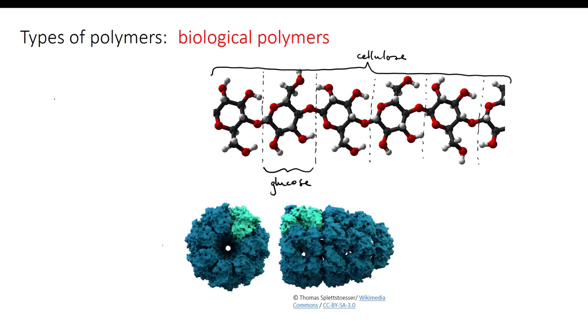Proteins make up a significant part of the structure of all living things. This picture shows a space-filling model of a very large protein known as a chaperonin. The individual monomer units aren't visible here. The chain has twisted around itself in a complicated way to form this three-dimensional barrel shape which is crucial to its function, which is to help other protein chains to fold up in the correct way.